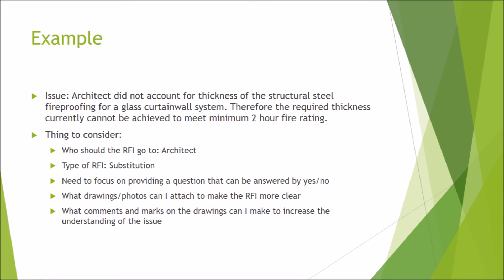For this example, we are going to look at an issue where an architect did not account for the thickness of the structural steel fireproofing for a glass curtain wall system. Therefore, the required thickness currently cannot be achieved to meet a minimum two-hour fire rating. The things we want to consider are: who should this RFI go to, the type of RFI, the need to focus on providing a question that can be answered by yes or no, and what drawings or photos we can provide to make the RFI more clear.